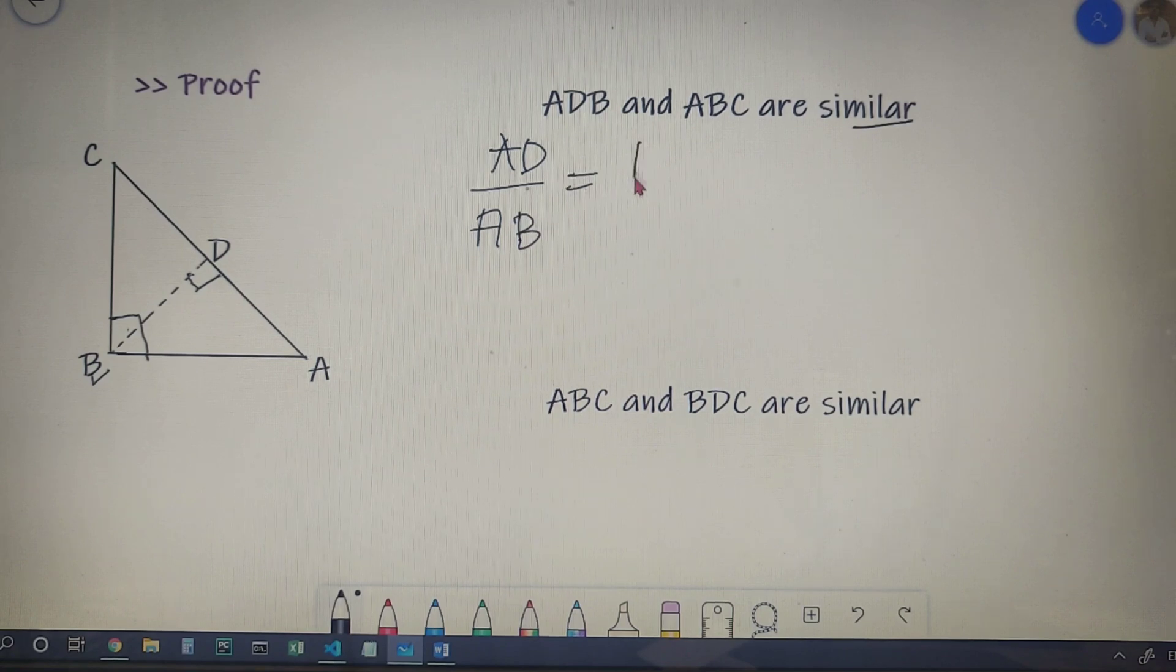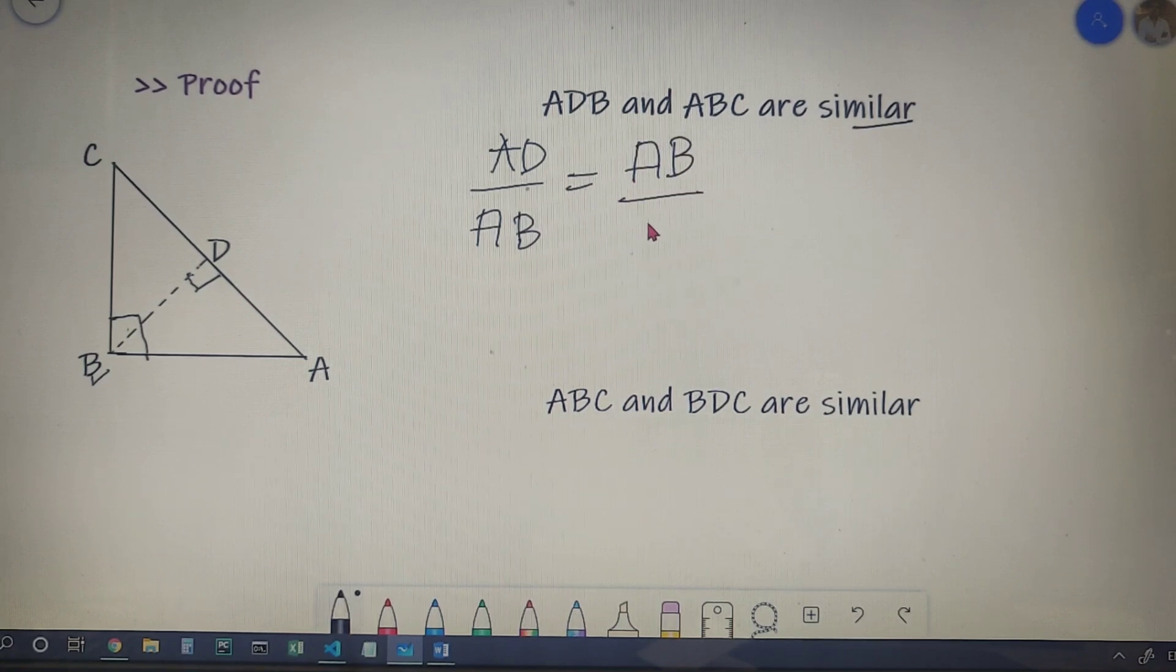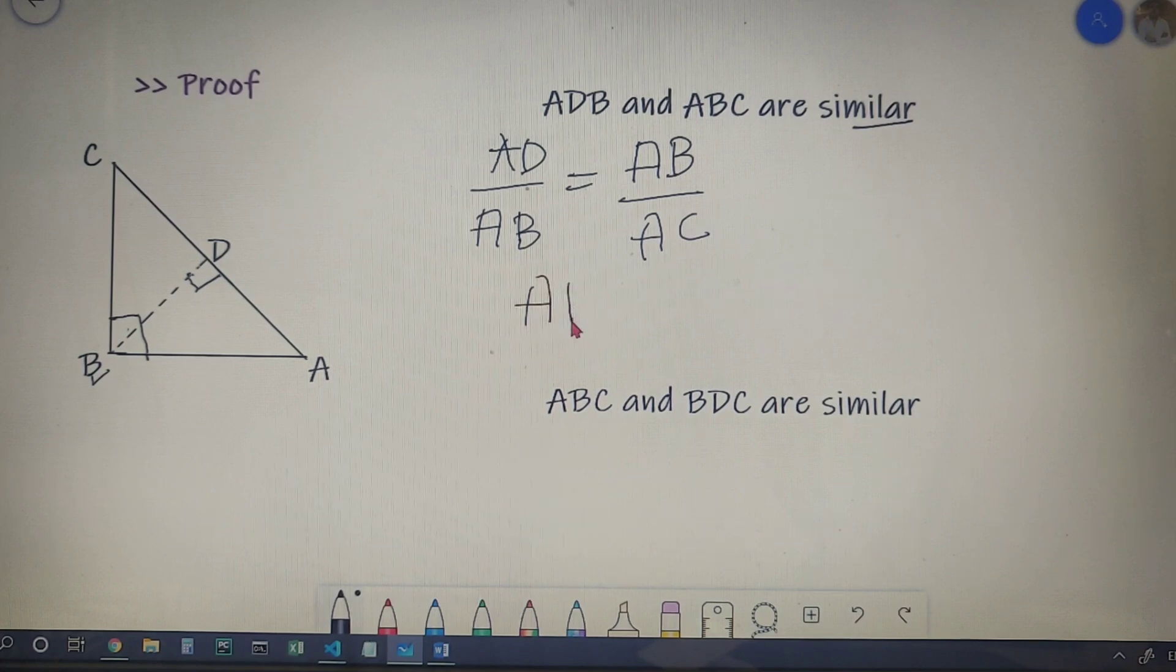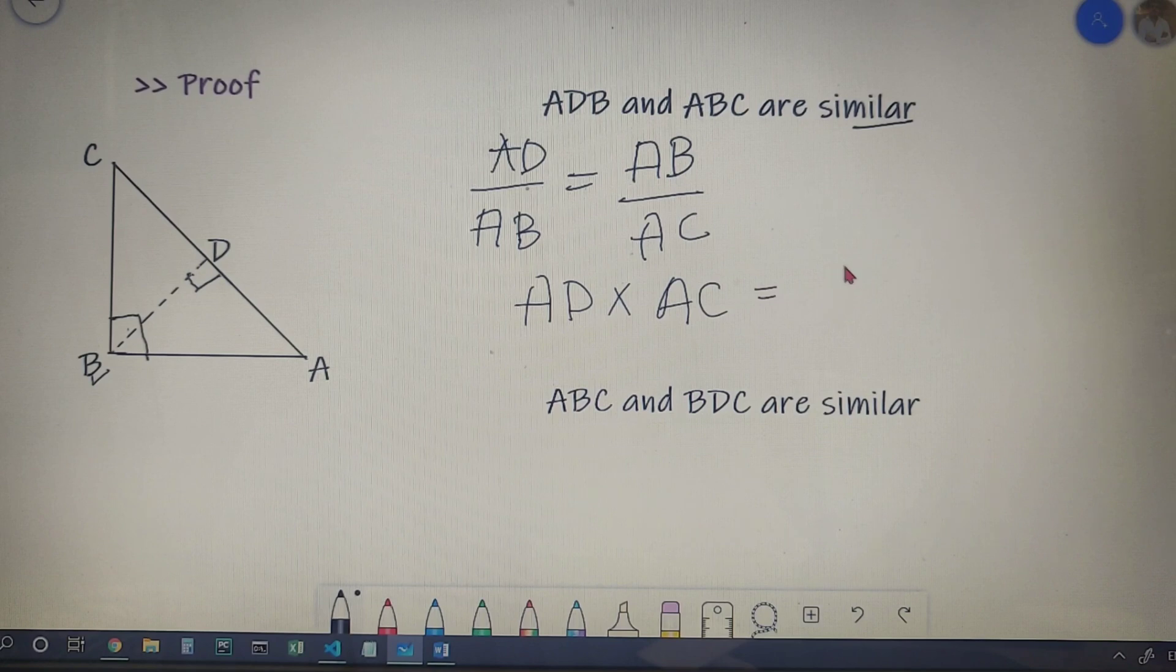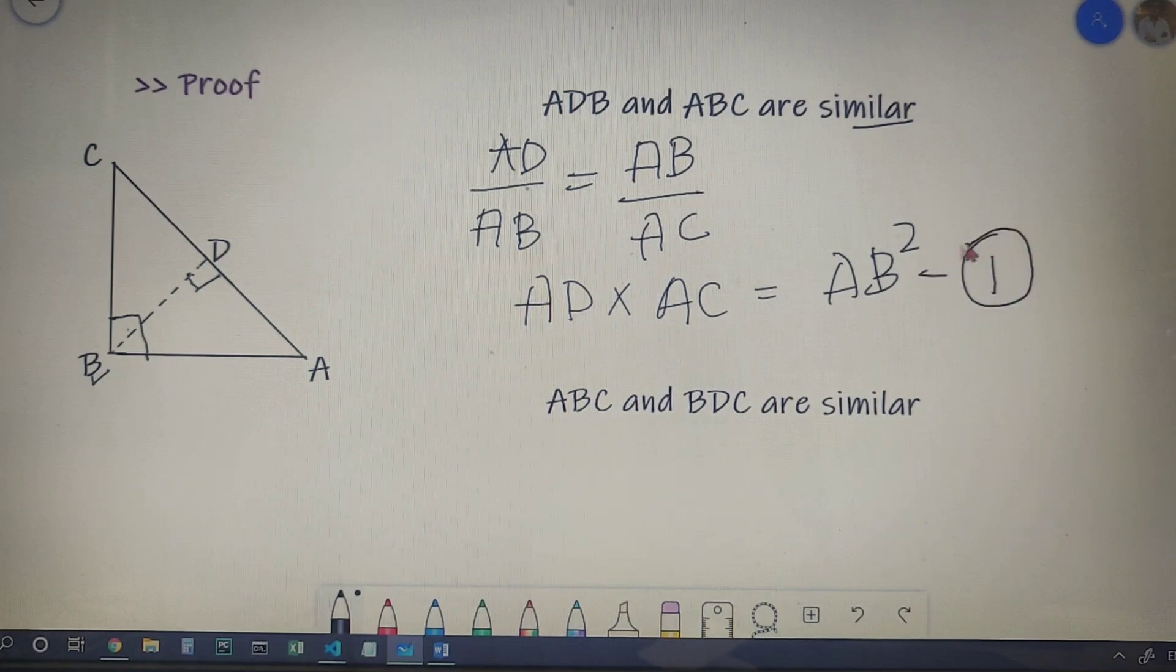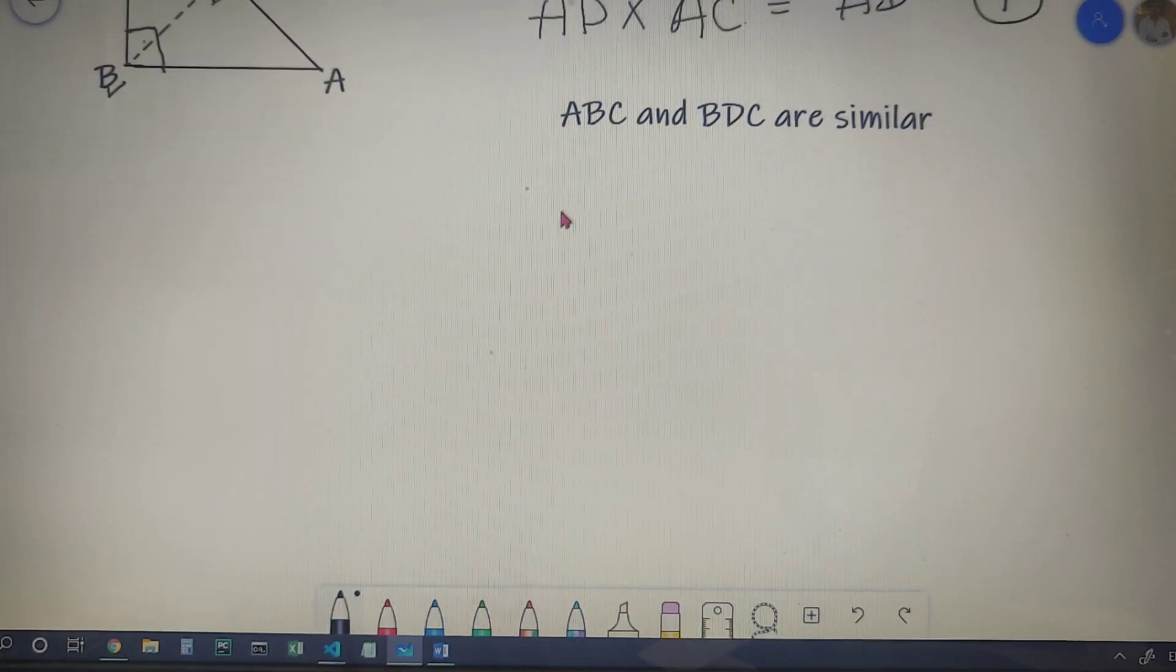Now upon cross multiplication, I get that AD into AC is equal to AB square. Let us mark this as equation number one.